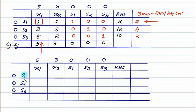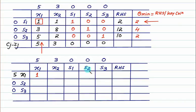Step 2: the entering variable is x1 and the leaving variable is s1. We cancel s1 and enter x1 with coefficient 5. We set up the new identity matrix entries: x1 position is 1, s2 is 1, s3 is 1, and the rest are 0. These rows are labelled r1, r2, r3 for old and r1 dash, r2 dash, r3 dash for new.